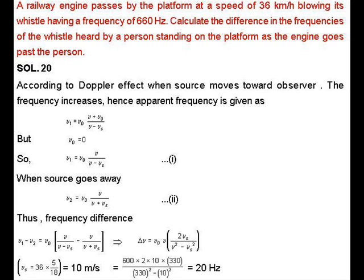The apparent frequency when source moves toward observer is ν = ν₀v/(v - vₛ). Similarly, when the source moves away from observer, ν₂ = ν₀v/(v + vₛ).